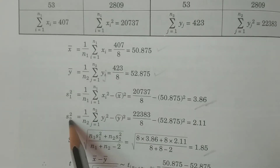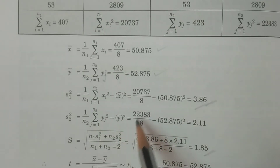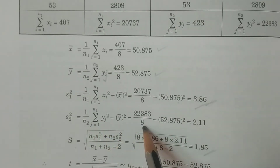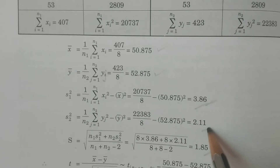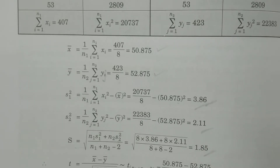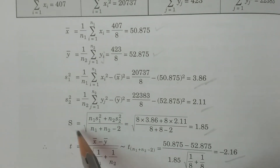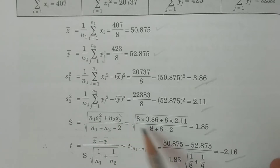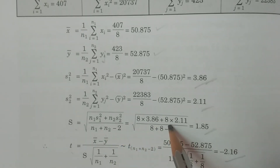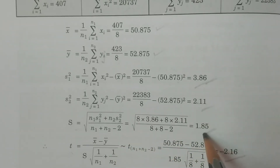Next, the pooled standard deviation S equals the square root of (N1·S1² + N2·S2²) divided by (N1 + N2 − 2), which is the square root of (8 × 3.86 + 8 × 2.11) divided by (8 + 8 − 2) = 14, giving S = 1.85.